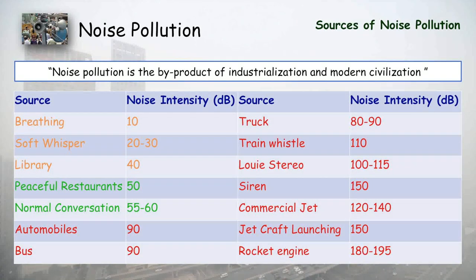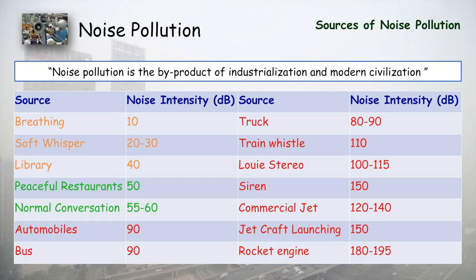Above the safe range, automobiles, buses, and trucks produce up to 90 dB of noise, which is considered noise pollution. Trains produce around 110 dB; loud stereos up to 115 dB; sirens from ambulances around 150 dB; commercial jets around 140 dB; jet aircraft launching around 150 dB; and rocket engines can produce up to 190 dB — all of these are harmful to human health.